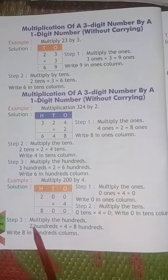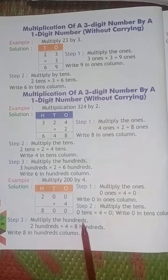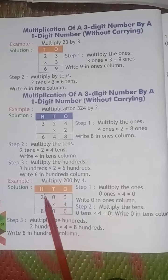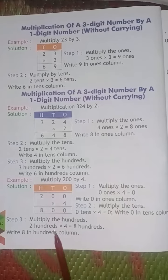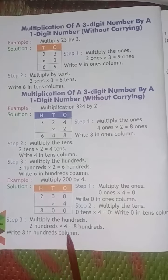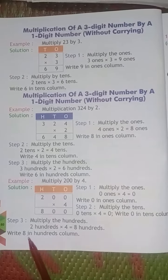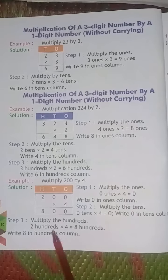Step 3: Multiply the hundreds. We have to multiply the hundreds. 2 hundreds into 4 is equal to 800. Write 8 in the hundreds column.